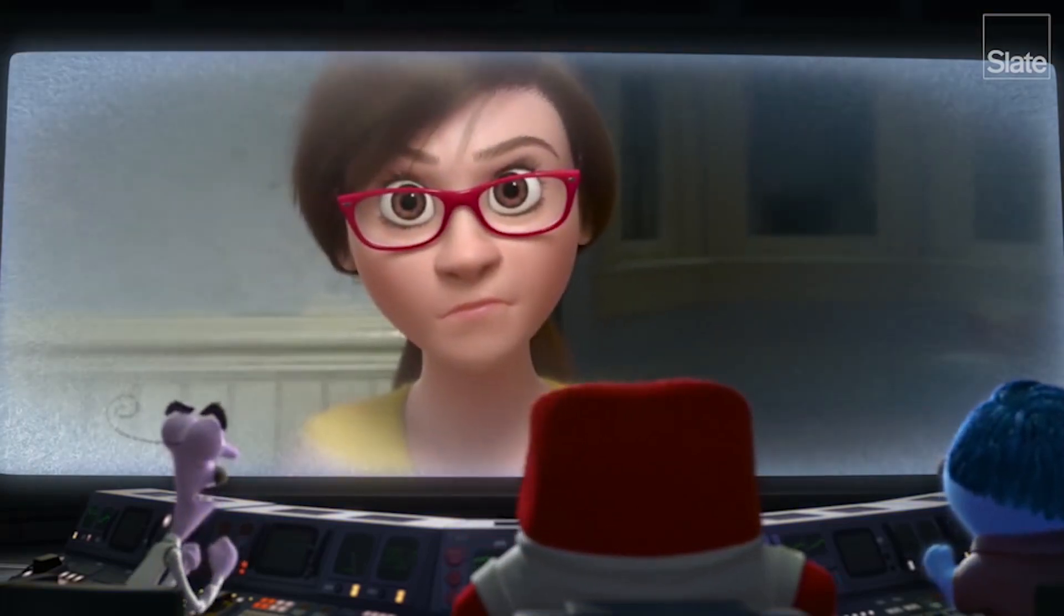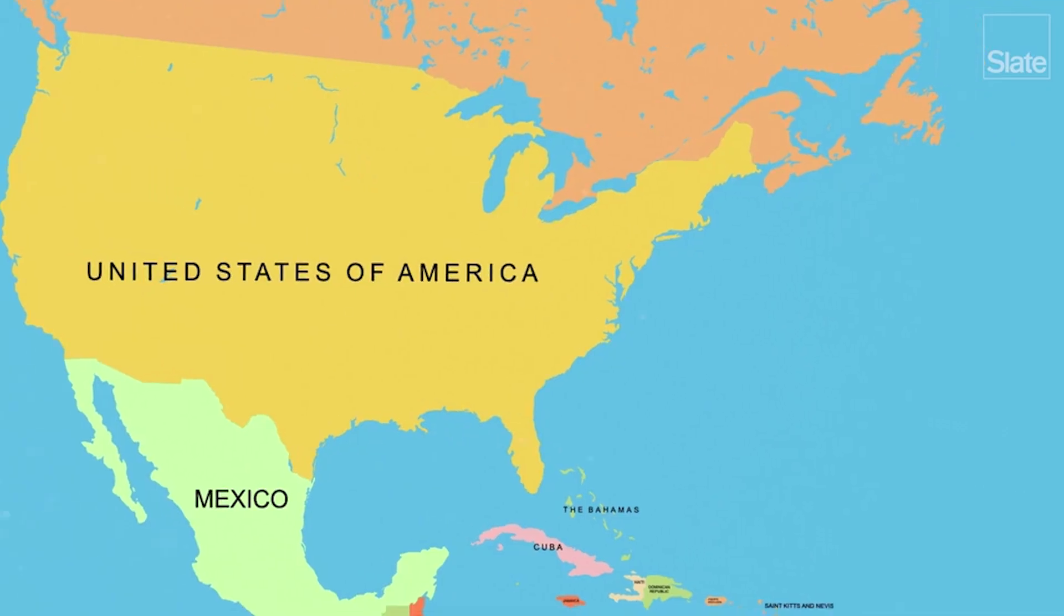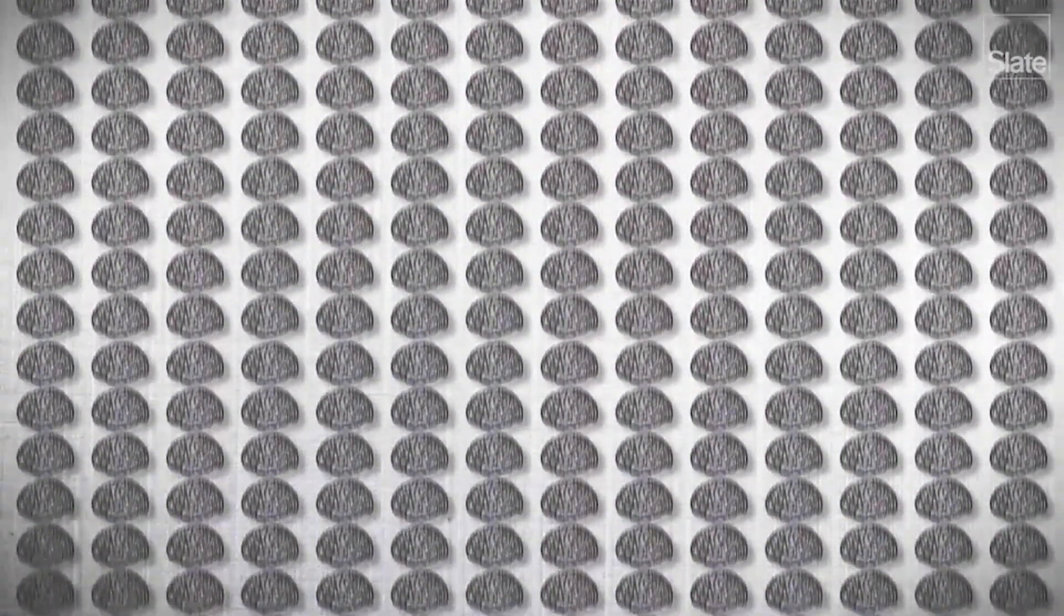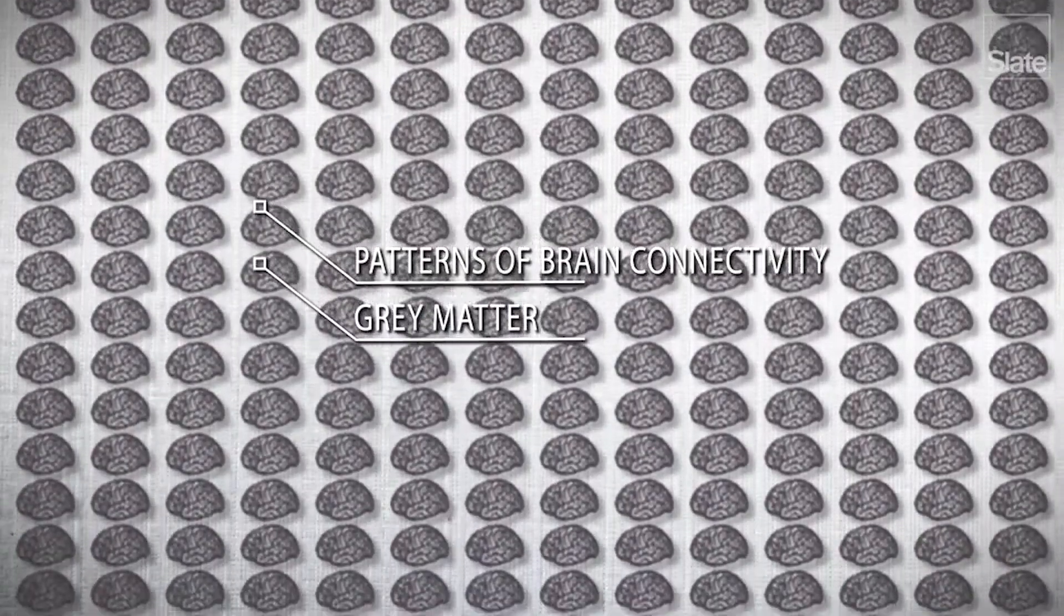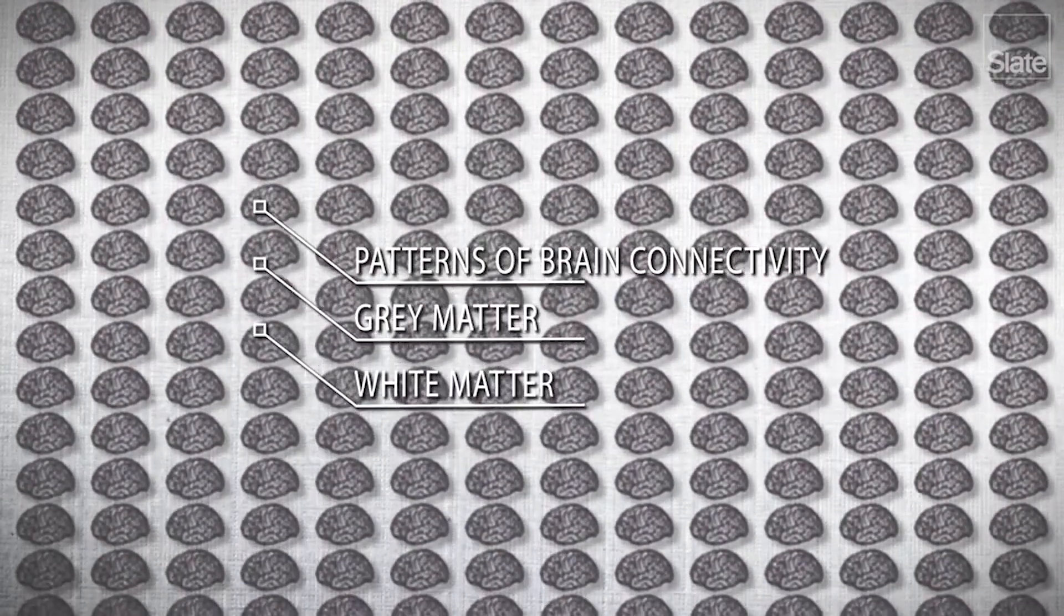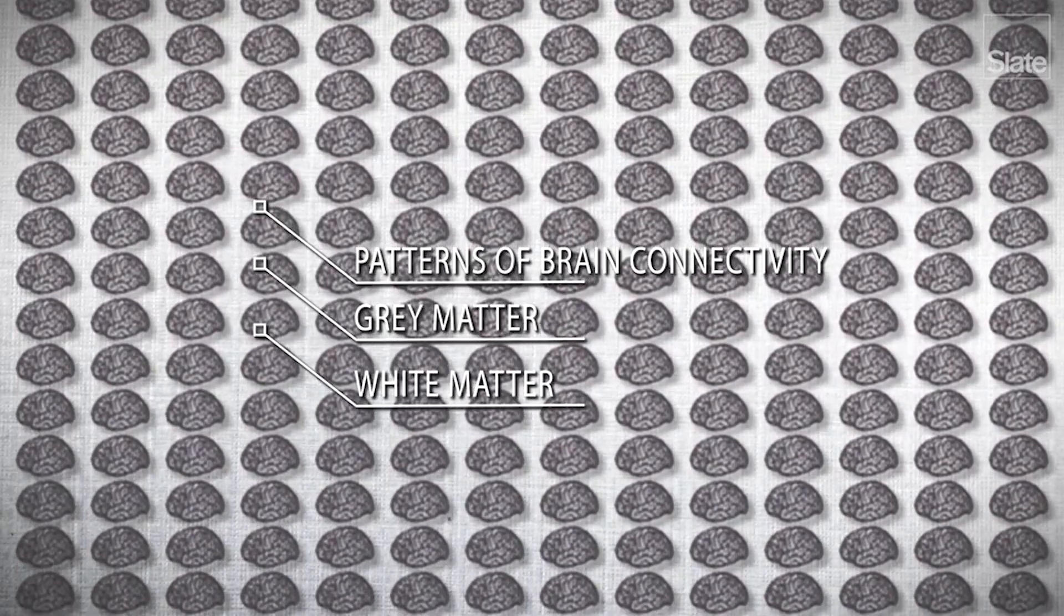there is no such thing as a male or female brain. Researchers at Tel Aviv University analyzed 1,400 brains, looking primarily at three features that have been previously shown to correlate with gender: patterns of brain connectivity, gray matter, the meat of the brain, or white matter, the cells that help gray matter areas communicate.